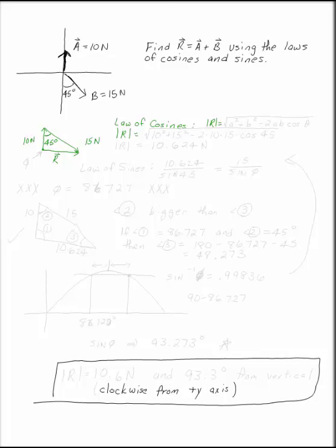So if we start with A, I have 10 newtons up, and then I'm going to have 15 newtons down. The resultant connects head to tail. So that's what we're looking for.